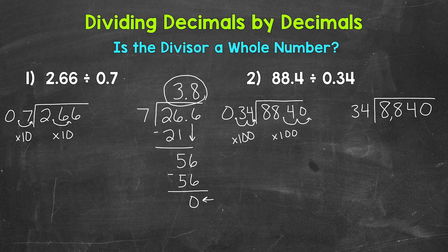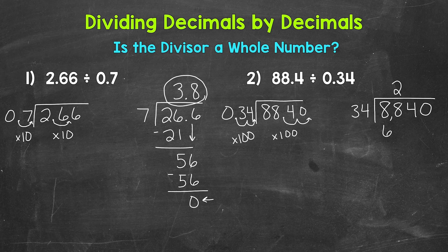Now we're ready to go through the division process. Let's start with divide. We have 8 divided by 34 — how many whole groups of 34 in 8? Well, we can't do that, so we need to look at the next digit and use 88. We have 88 divided by 34 — how many whole groups of 34 in 88? Well, 2 — that gets us to 68. Put the 2 above this 8 — not the other 8 — because we used the 88. Then we multiply: 2 times 34 is 68. Subtract: 88 minus 68 — 8 minus 8 is 0, and 8 minus 6 is 2 — so we get 20.